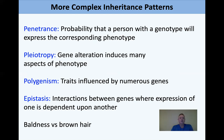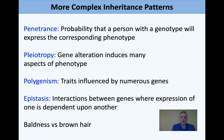Pleiotropy is where one alteration in a gene induces many aspects of a phenotype. For example, missing the ATM gene can make you sensitive to ionizing radiation, cancer-prone, cause difficulty walking, and telangiectasia — problems with blood vessels, notoriously in the eye. One gene gives many different phenotypes. Polygenism is the idea that traits are influenced by numerous genes — things like intelligence have no simple Mendelian cross; complex behavioral traits are particularly subject to polygenism.